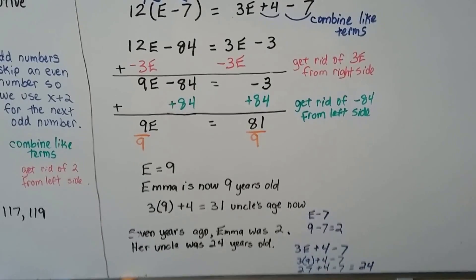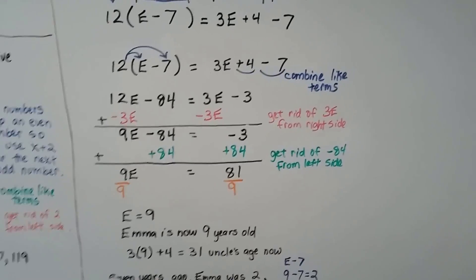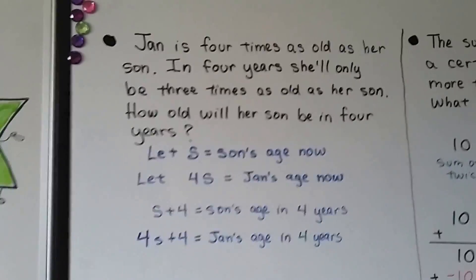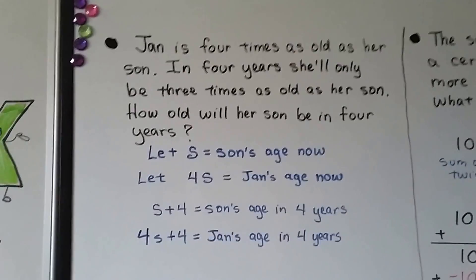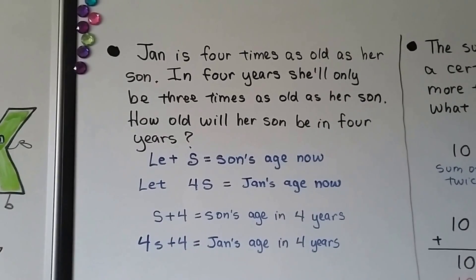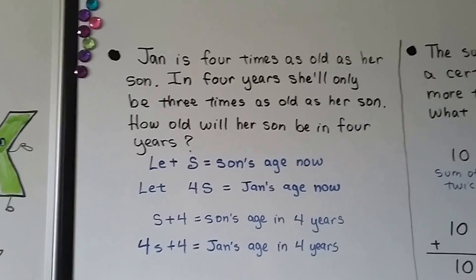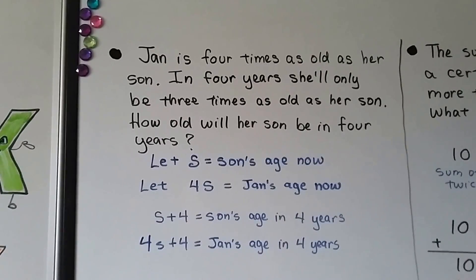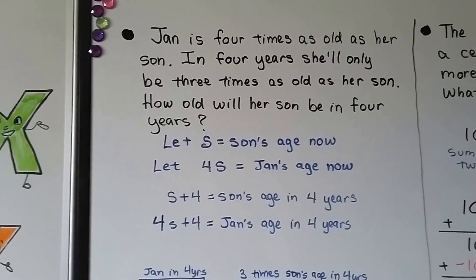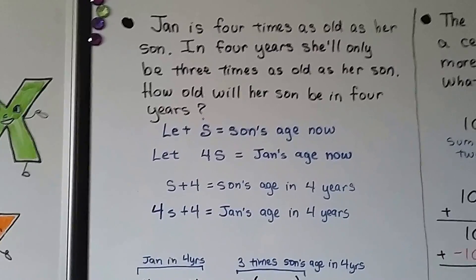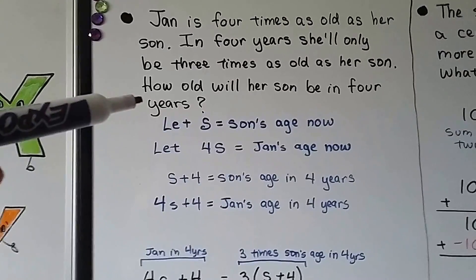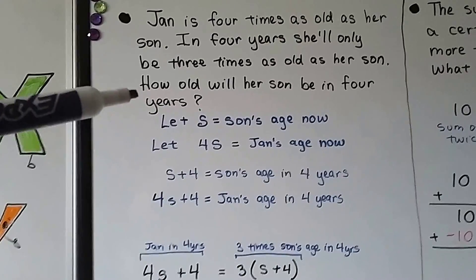If you need to go back to the beginning of that problem and watch it again, that's okay. Now it's really important to be able to decipher these because there will be a couple of problems like this on the test — don't skip them. Jan is four times as old as her son. In four years, she'll only be three times as old as her son. How old will her son be in four years? Notice it's not asking his age now — it wants his age in four years, so don't let it trick you.